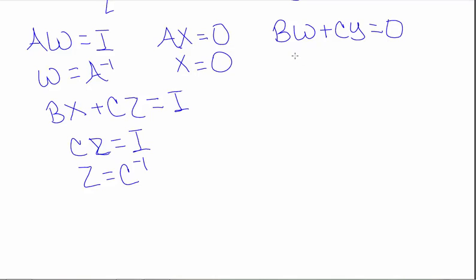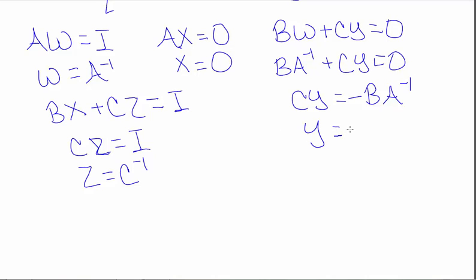And now here we can solve for Y. This says BA inverse plus CY equal to 0. We can subtract BA inverse over and then multiply both sides by C inverse on the left.